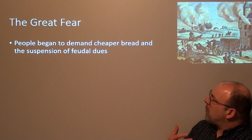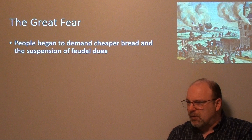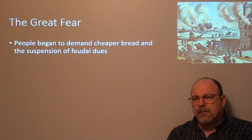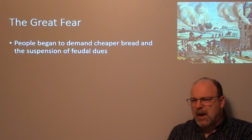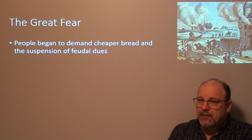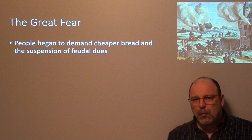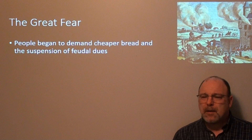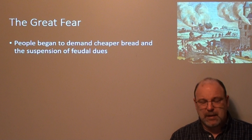People began to demand cheaper bread and the suspension of feudal dues. What really tied peasants down was the taxes — the tithe to the church, and the labor they had to perform each year. The peasants were constantly having to pay dues through labor, tax, or money, yet they were the ones who had the least of it. When the revolution occurs, the number one issue for the peasantry was the price and availability of bread, and they wanted their feudal dues suspended and dropped.